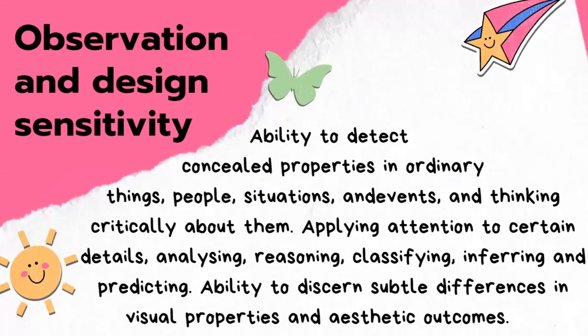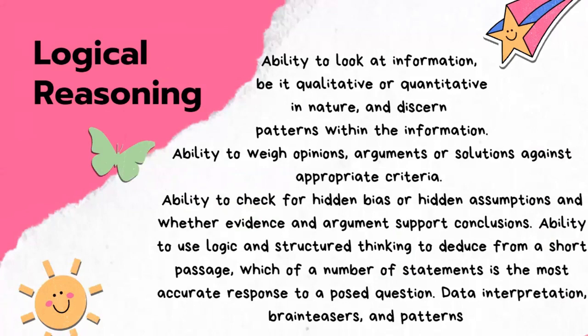Observation and design sensitivity covers the ability to detect concealed properties in ordinary things, people, situations, and events, and thinking critically about them — applying attention to detail, analyzing, reasoning, classifying, inferring, and predicting, as well as the ability to discern subtle differences in visual properties and aesthetic outcomes.